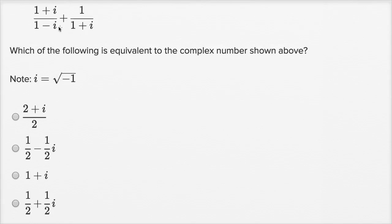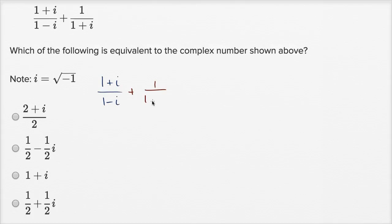When you add two fractions like this, you want to find a common denominator. The easiest way is to take the product of both denominators. So we want to take (1+i)/(1-i) and add that to 1/(1+i).